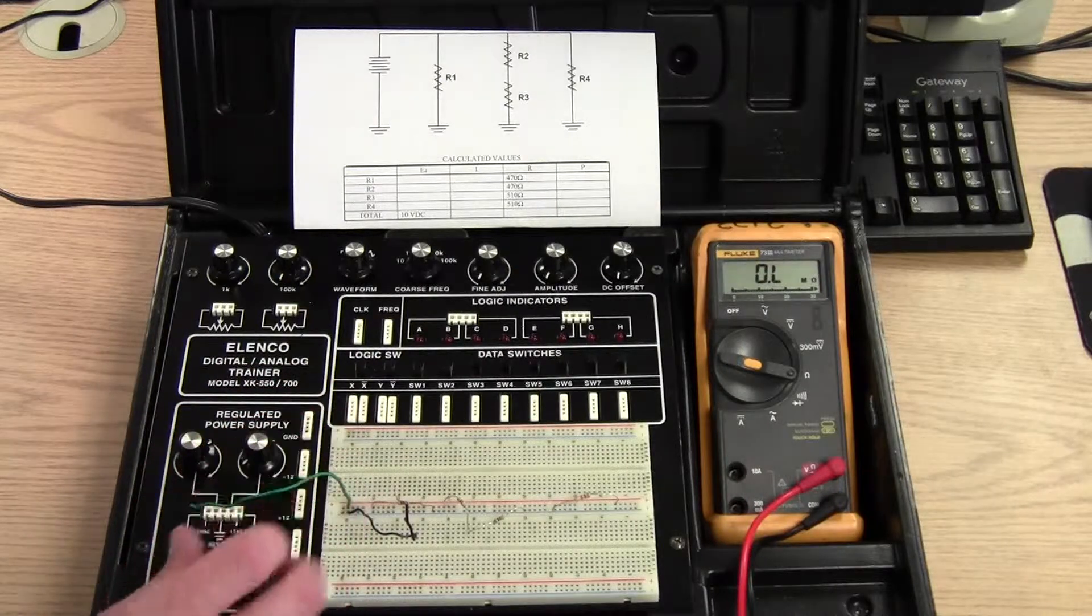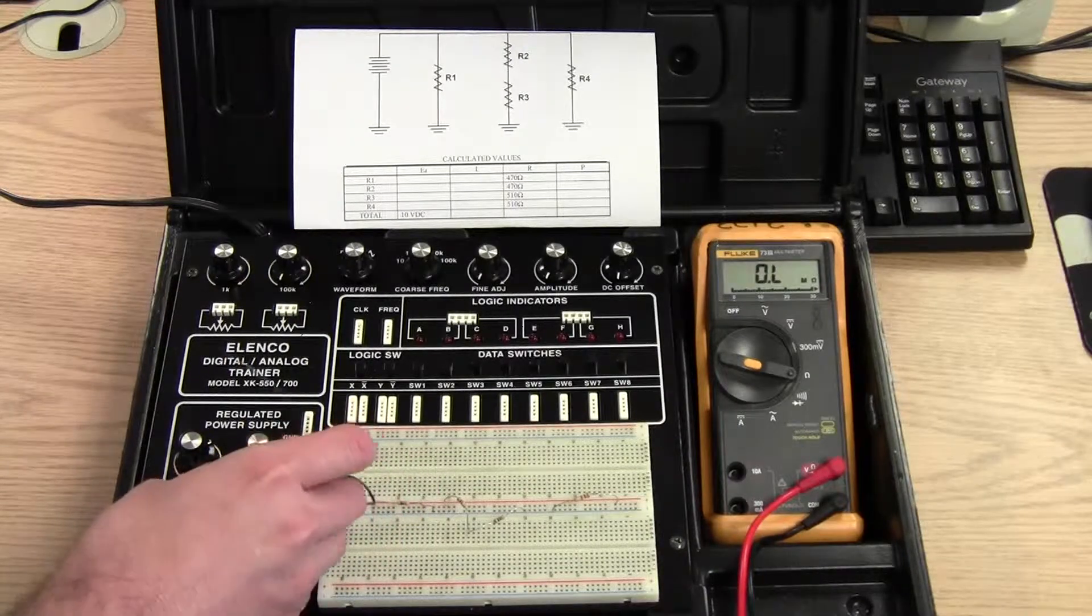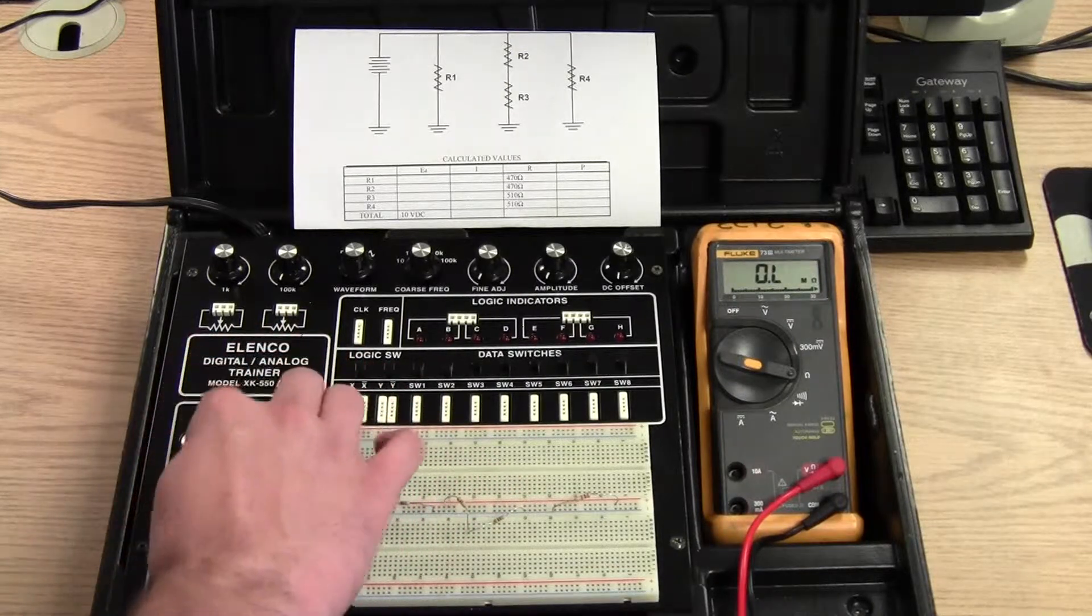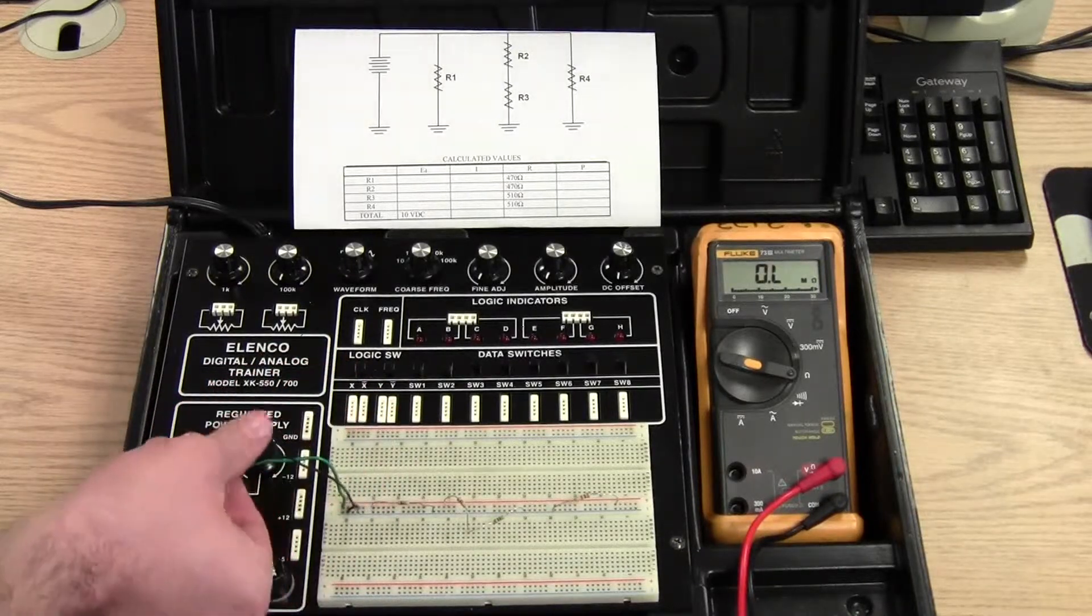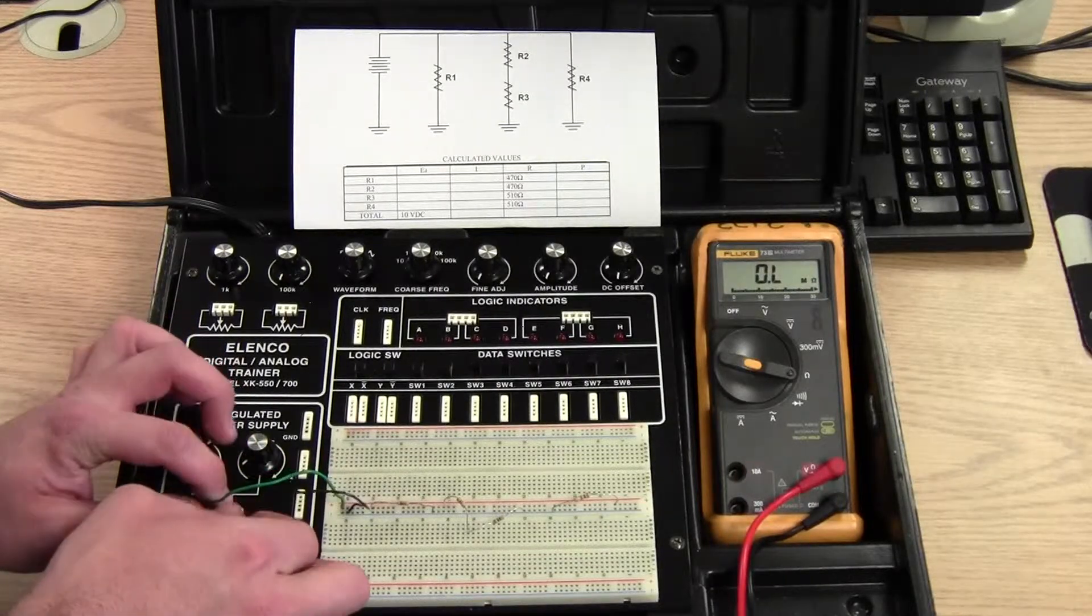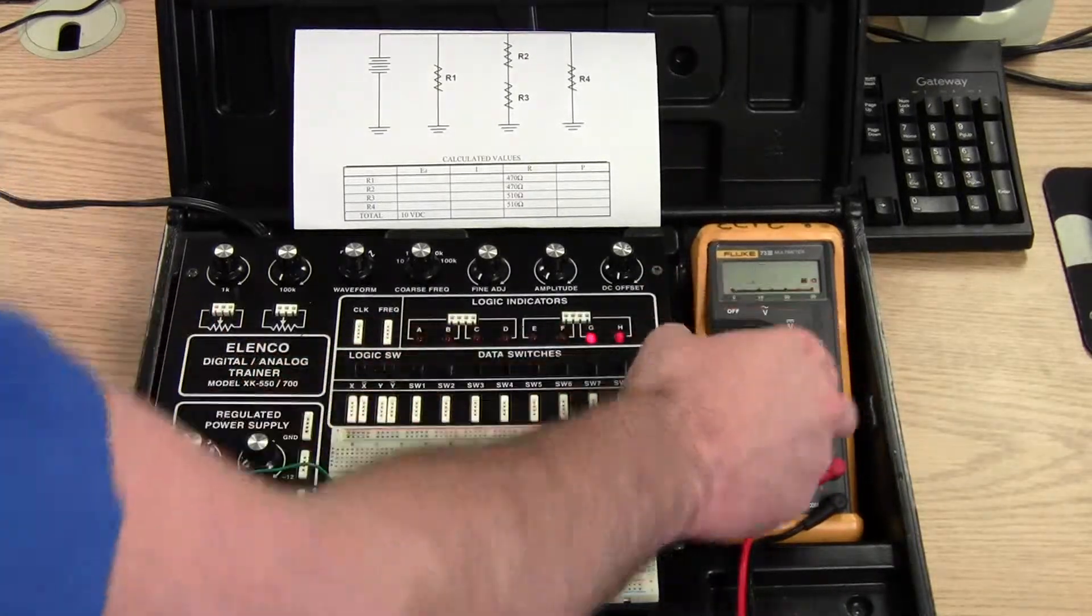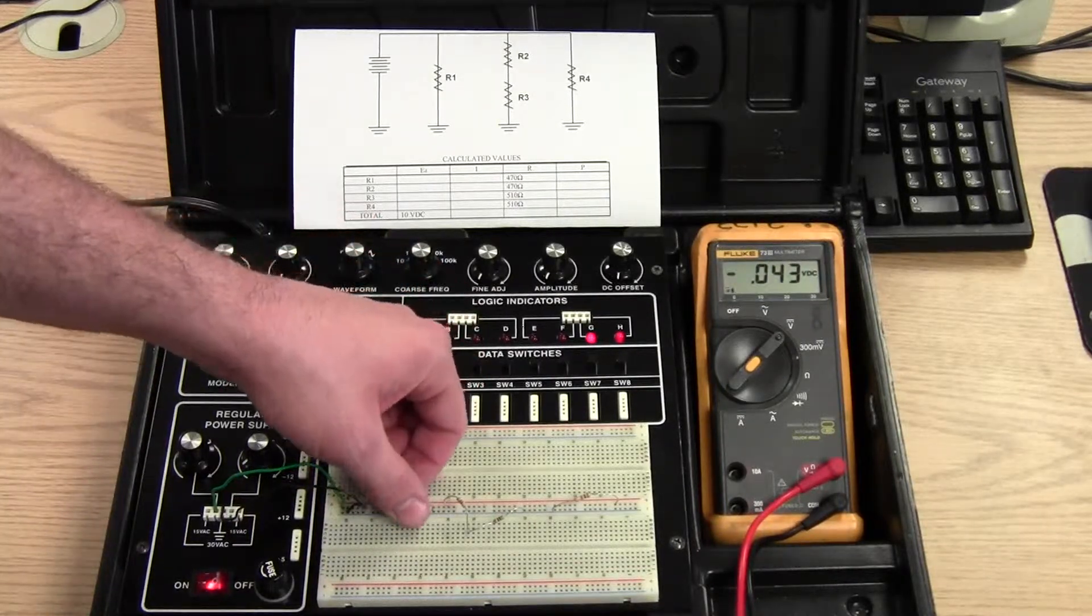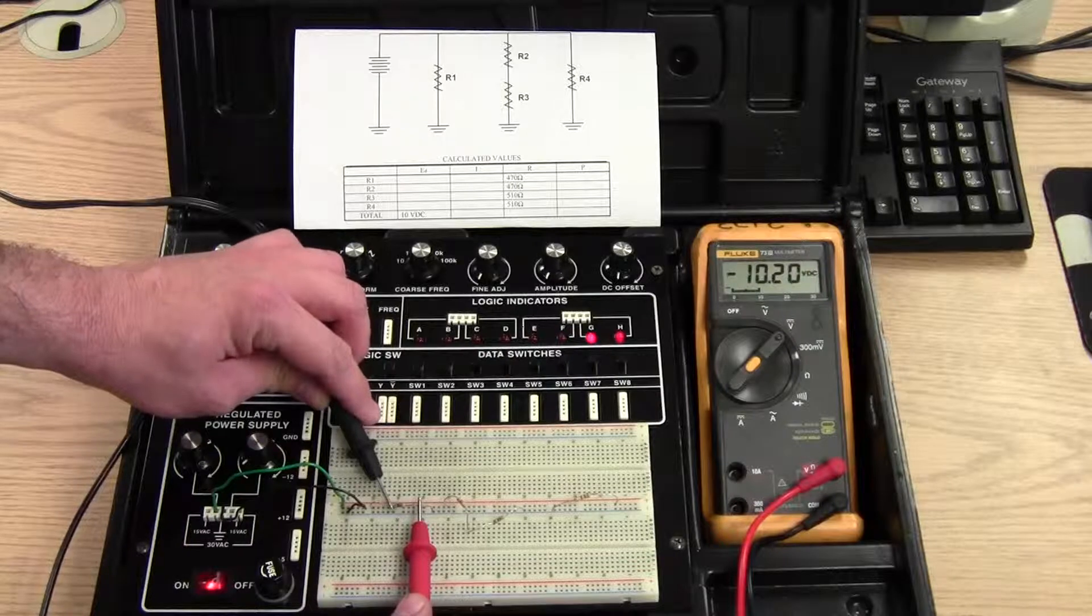So we can put these back over here into our power source and our ground. I can turn my box on now. I'm going to measure voltage drop. I'm going to start by measuring voltage drop of R1, the 470 ohms. Being that it's in parallel with everything, it should drop source voltage and it does.